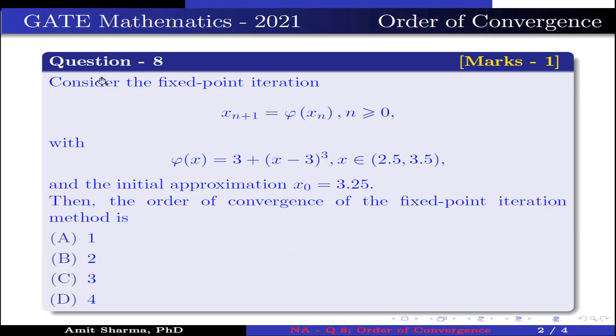Question number 8: Consider the fixed point iteration x_{n+1} = ψ(x_n), where n ≥ 0, with ψ(x) = 3 + (x - 3)³, where x belongs to the open interval (2.5, 3.5), and the initial approximation x_0 is 3.25.